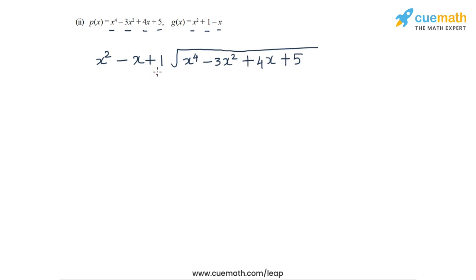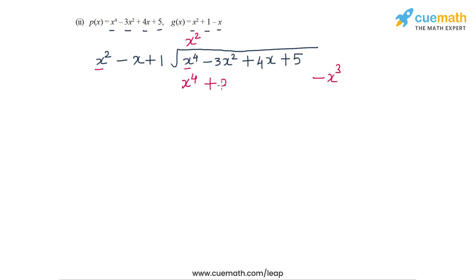The first multiplier is x², because we need to turn x² into x⁴. This multiplier generates the terms x⁴ - x³. Since there is no x³ term in the dividend, we write -x³ here, and then + x². Now when we subtract, -x³ becomes +x³.